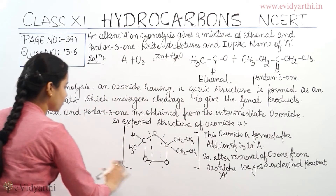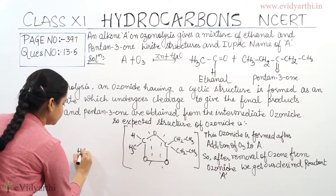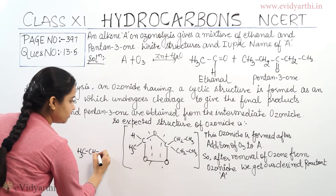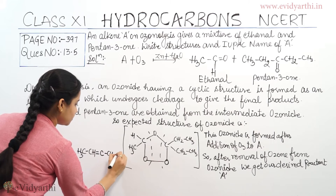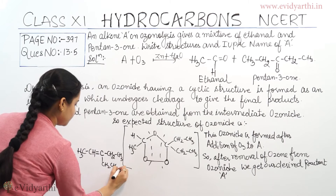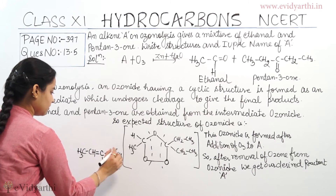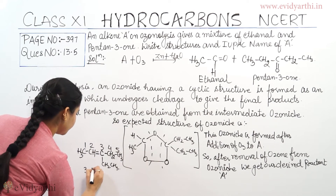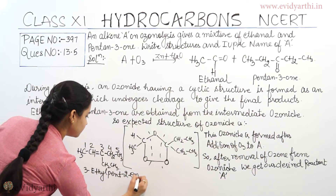Now, if we remove the ozone from the ozonide structure, what we get is: CH3–CH=C–CH2–CH3 with a CH2–CH3 group as well. So the structure of alkene A is 3-ethylpent-2-ene. Numbering the carbons: 1, 2, 3, 4, 5 — and there is an ethyl group at carbon 3.